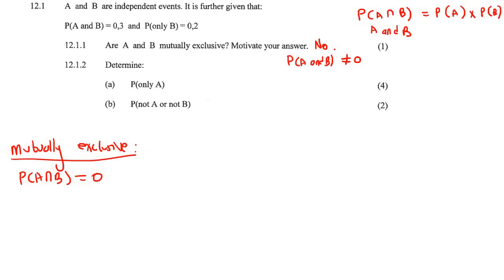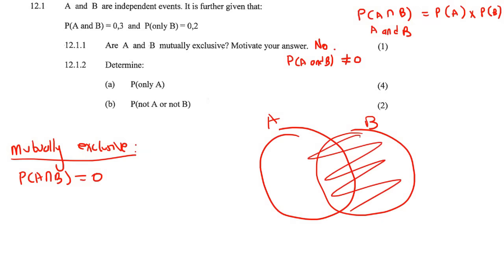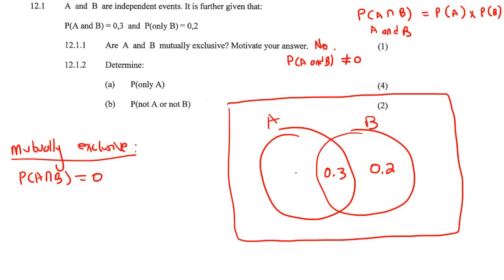So what we need to do now for this next question, only A, is I would advise that we draw a Venn diagram. We know that the circles are going to overlap because we know that they're not mutually exclusive. So we can say A and B. Now they've told us that B only is 0.2. Now be careful. What does only B mean? Only B is this part. Some students think that it's all of this, but that's not true. So only B is 0.2. Then it says probability of A and B is 0.3. So that's this part over here. But you've got to be careful. There might be stuff on the outside.